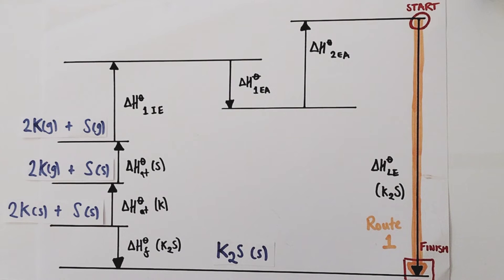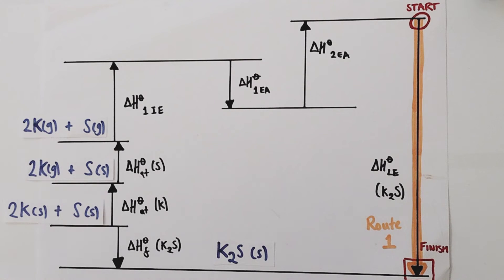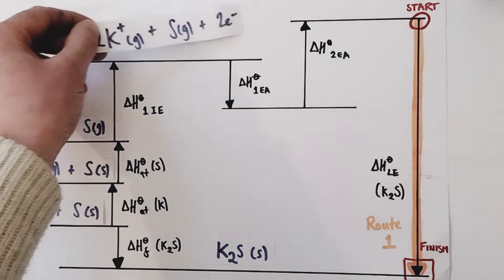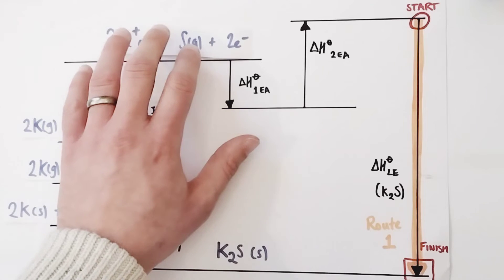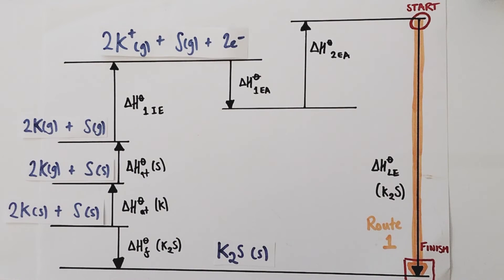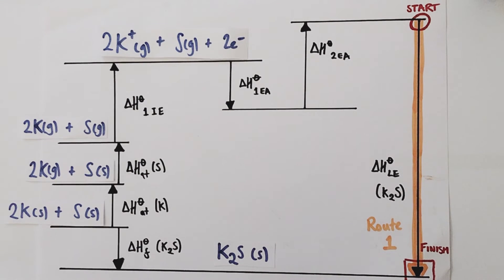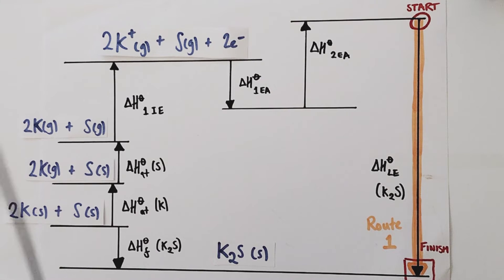The next enthalpy change is responsible for turning the metal atoms into metal ions. It's known as the first ionisation energy, defined as the enthalpy change for the removal of one mole of electrons from one mole of gaseous atoms to form one mole of monopositive or 1+ ions. Now, we have two moles of potassium atoms, so we're going to form two moles of K⁺ ions by removing two moles of electrons from those atoms. We have yet to ionise the sulphur.